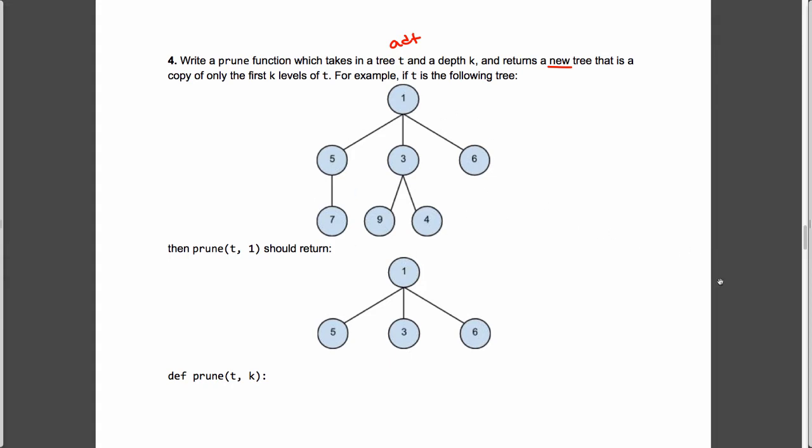we take a look at this tree right here, and we pass in prune t1, we want to keep only the elements of the tree that are up to a depth 1. So what do we mean by depth? Well, depth is the number of edges between root and a leaf.